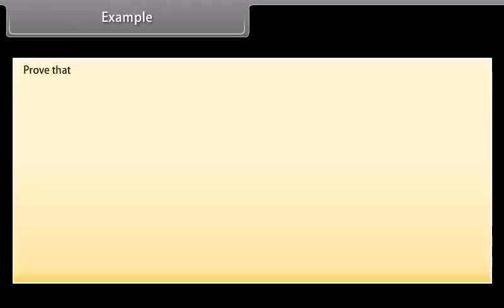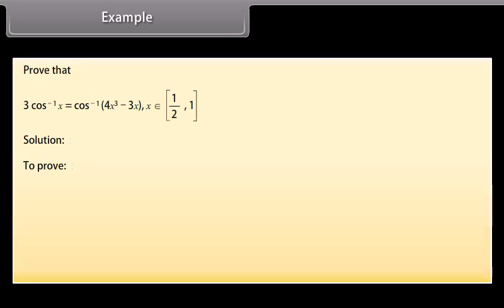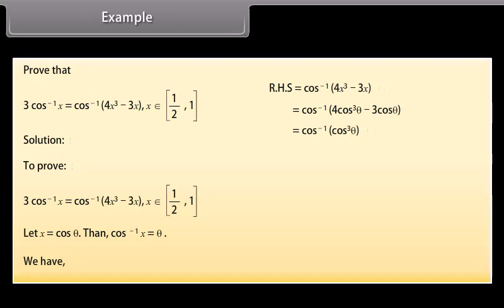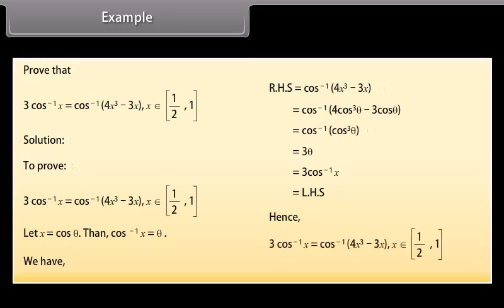Example: Prove that 3 cos⁻¹ x = cos⁻¹(4x³ − 3x), x ∈ [1/2, 1]. Solution: Let x = cos θ, so cos⁻¹ x = θ. Then the right-hand side = cos⁻¹(4cos³θ − 3cos θ) = cos⁻¹(cos 3θ) = 3θ = 3 cos⁻¹ x, which equals the left-hand side. Hence 3 cos⁻¹ x = cos⁻¹(4x³ − 3x) for x ∈ [1/2, 1].